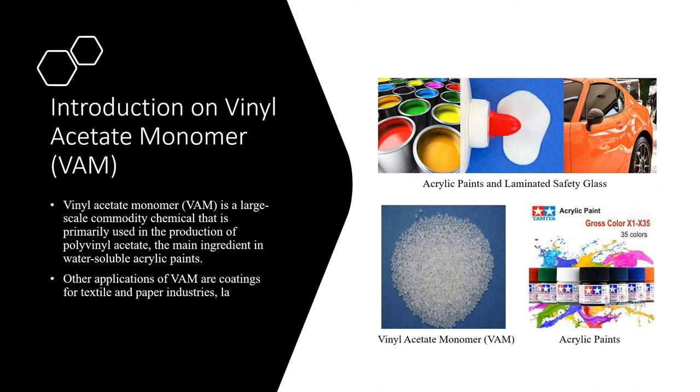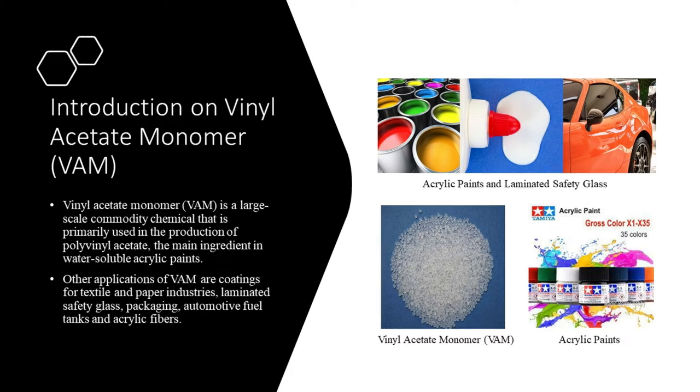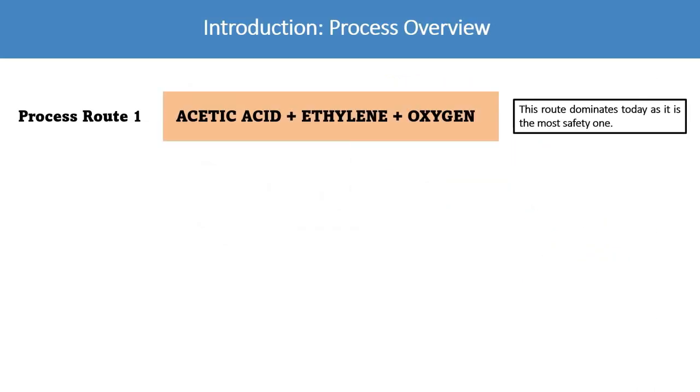Other applications of vinyl acetate monomer are coatings for textile and paper industries, laminated safety glass, packaging, automotive fuel tanks, and acrylic fibers.